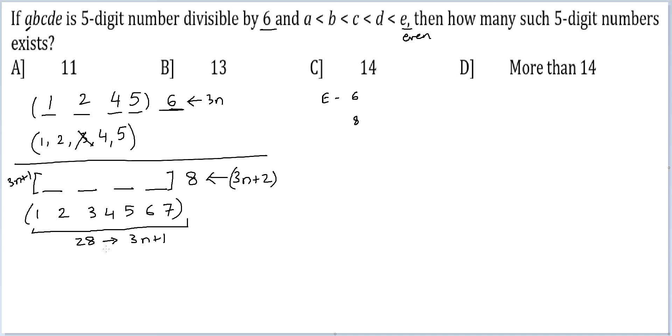28, if you see, is already a 3n plus 1 kind of number. So the three numbers that you are excluding should also have their summation be of the kind 3n, so that when you remove it from 28, the summation remains a 3n plus 1 kind of number.